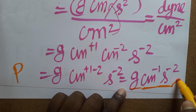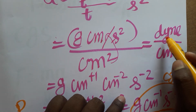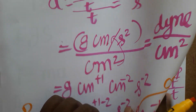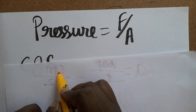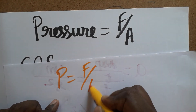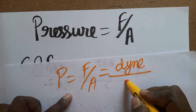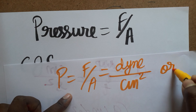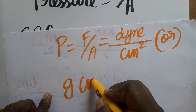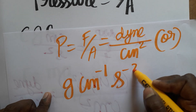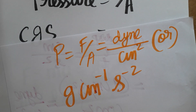So the unit of pressure is dyne per centimeter squared, or equivalently gram centimeter to the minus 1 second to the minus 2. Pressure equals force per unit area, where the force unit is dyne and area unit is centimeter squared. You can follow either form. Please subscribe if you like my channel. Thank you for watching.